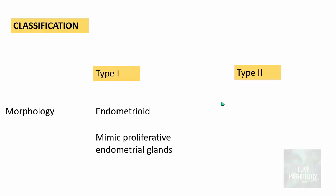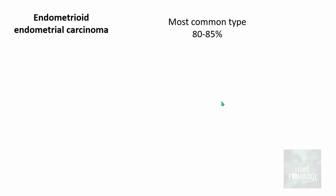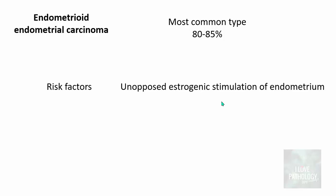Morphologically, Type 1 resembles the normal proliferative type of endometrial glands, which is why it is called endometrioid carcinoma, and Type 2 is called serous carcinoma of the endometrium. The endometrioid type is the most common, accounting for around 80 to 85% of cases. The major risk factor is unopposed oestrogenic stimulation of the endometrium. Conditions include anovulatory cycles, and women with early age of menarche and late menopause — meaning many reproductive years.